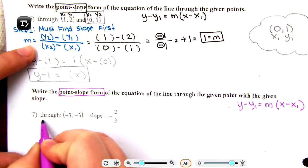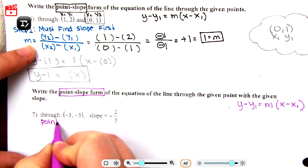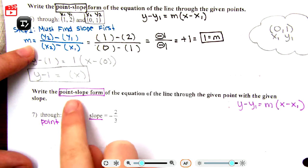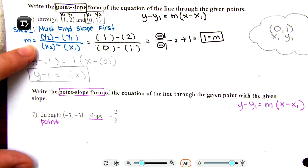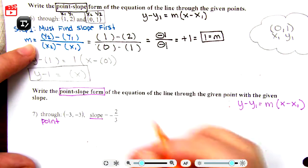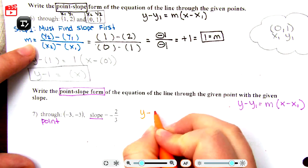Write the point-slope form of the equation of the line through the given point with a given slope. So they give us a point, they give us slope. We're not really creative how these things are called, so if we have a point and a slope in a point-slope form, that means we have all the information that we need.